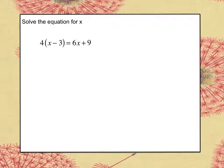Here is example number 1. Make sure you label it as example 1. We are going to solve the equation for x. This is a review of solving multi-step equations with variables on both sides from algebra 1. Let's review.